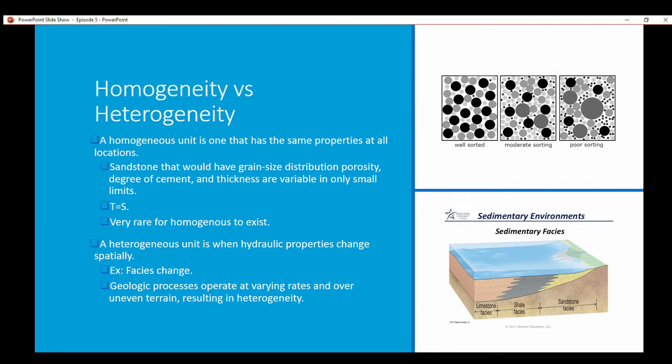It is very rare for homogeneous units to exist. A heterogeneous unit is when hydraulic properties change spatially. An example is a facies change. When you have an ocean depositing, you'll have sandstone depositing closer to the beach and then you'll have shale depositing at depth further into the continental shelf.